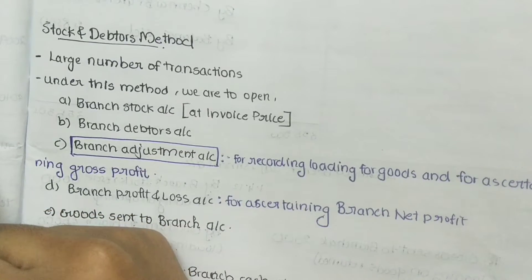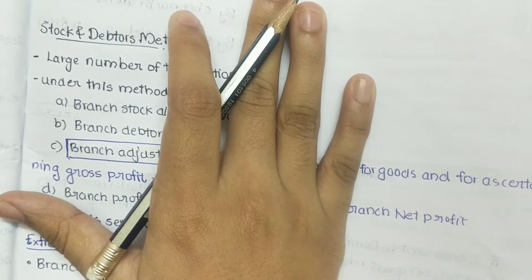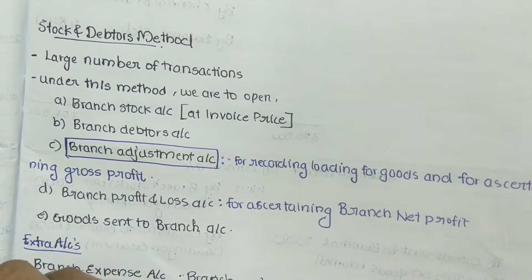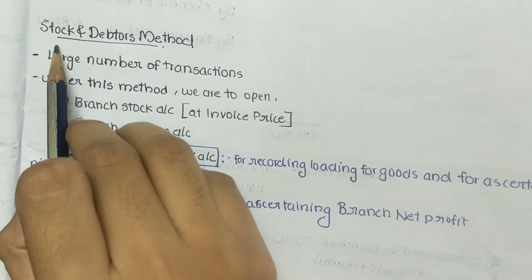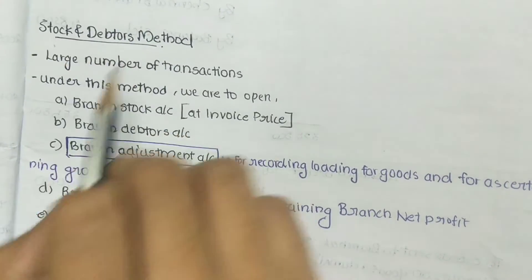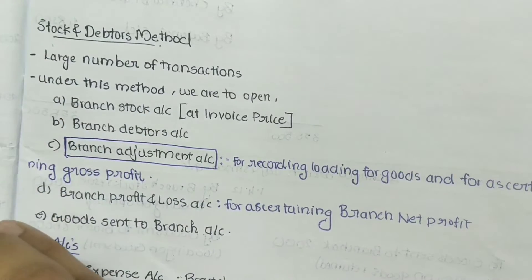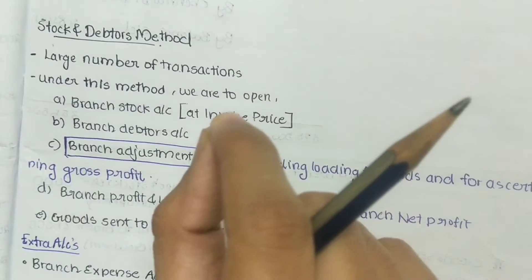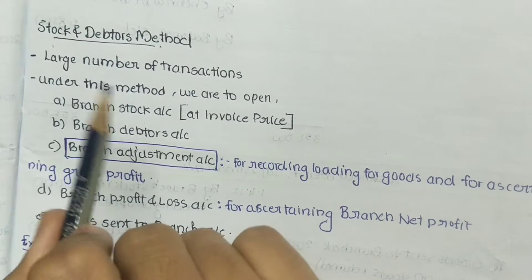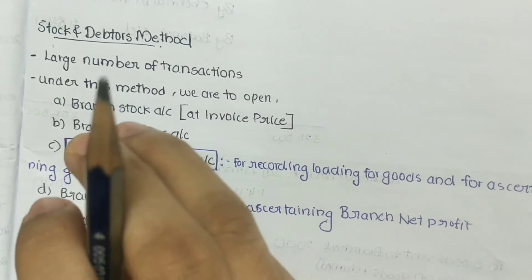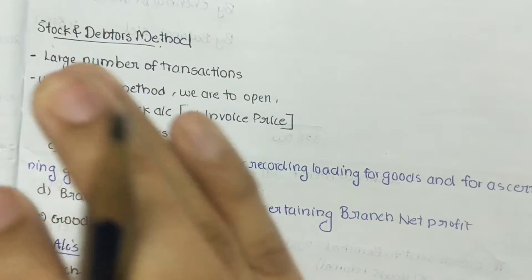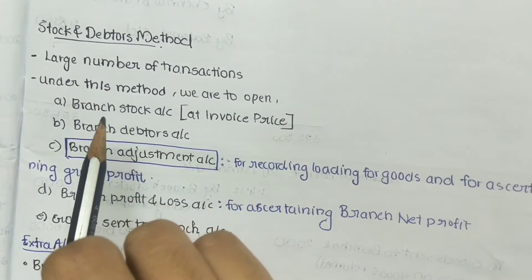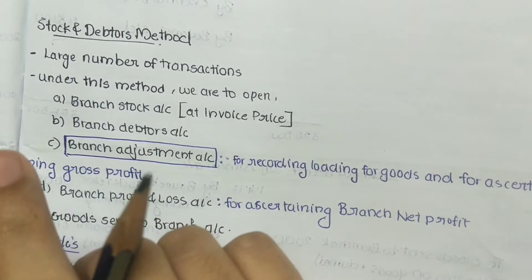Welcome to Amazon World. In this video I'll be explaining Illustration Number Five of Branch and Departmental Accounts. Before discussing this question, we need to understand how to do questions under the Stock and Debtors Method. Illustration Number Five comes under the head of Stock and Debtors Method. In the 2016 syllabus CMA Financial Accounting study material, it was placed under Final Accounts Method, but it should be under Stock and Debtors Method.